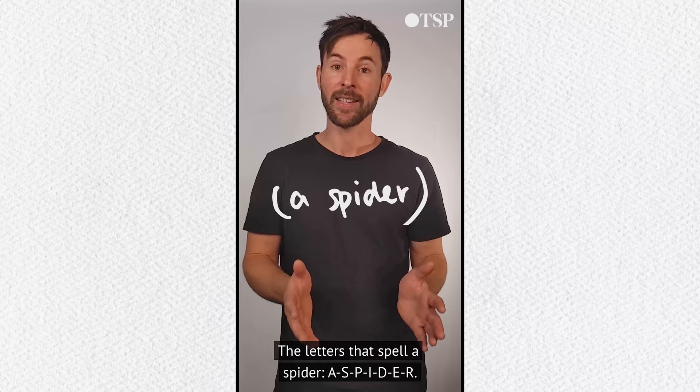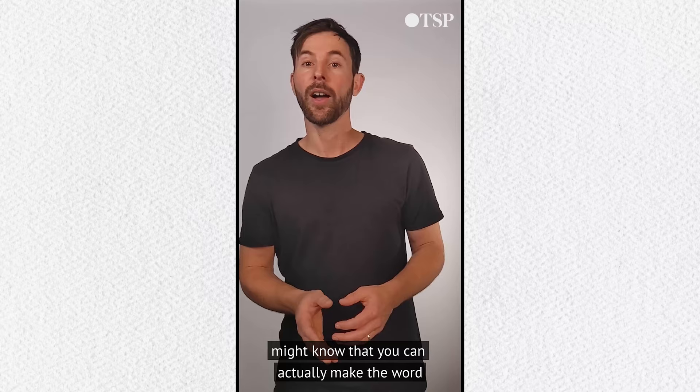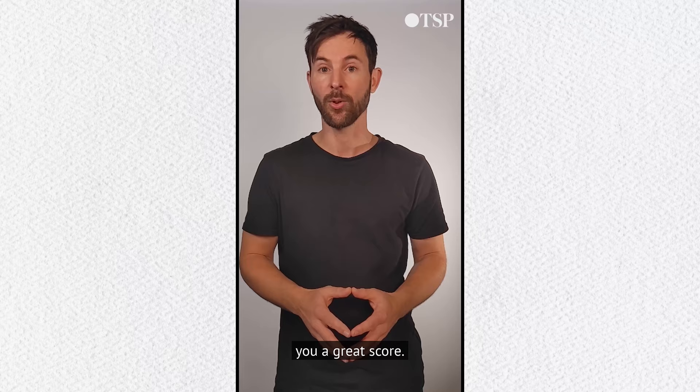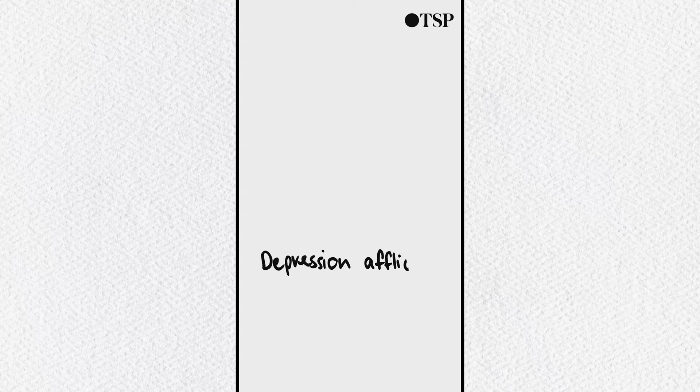Now, if you're an experienced player, you might know that you can actually make the word 'despair' out of those seven letters, which would give you a great score. This scenario could actually give birth to a cryptic clue — for example: 'depression afflicted a spider'.